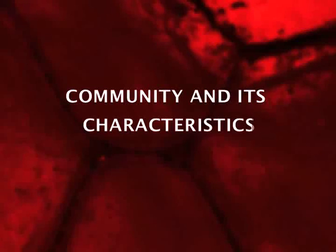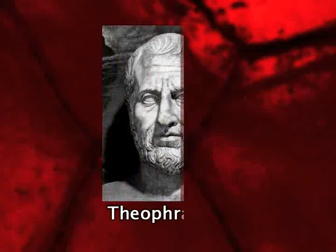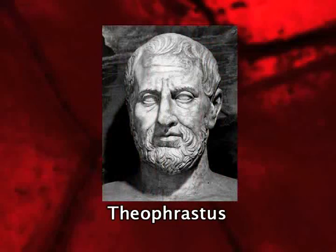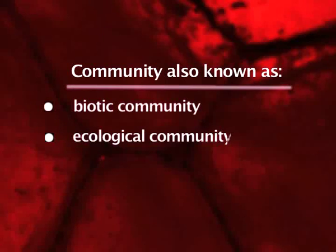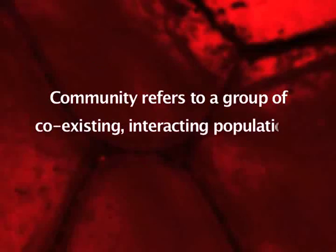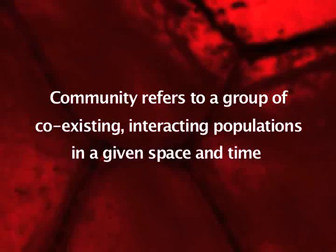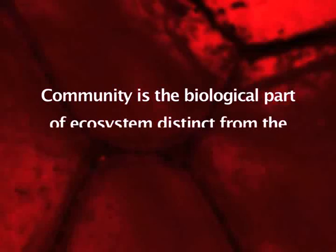Hello and welcome dear friends. Today we are here to talk about community and its characteristics. To begin with, let me give you a brief introduction of community. The concept of community is very old and can be traced back to the times of Theophrastus. A community, also known as biotic community, ecological community, or biocoenosis, refers to a group of coexisting and interacting populations in a given space and time. In other words, it is the biological part of an ecosystem, distinct from the abiotic part.